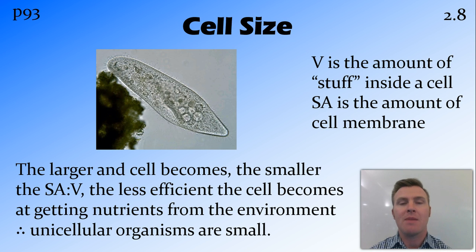Remember I said that the volume is the amount of stuff inside a cell, so the amount of cytoplasm, the amount of things that need nutrients like your mitochondria, like your chloroplasts, all those things. The surface area is the amount of membrane around that cell. So the larger that a cell becomes, the smaller the surface area to volume ratio, meaning the less efficient the cell becomes at getting nutrients from the environment. There's less surface area, less membrane, but there is more volume, more actual things that need those nutrients. And this is the reason that unicellular organisms are all small and that anything bigger than a unicellular organism has to be multicellular. You have to have multiple cells with each of those having its own surface area or its own cell membrane to decrease that surface area to volume ratio.